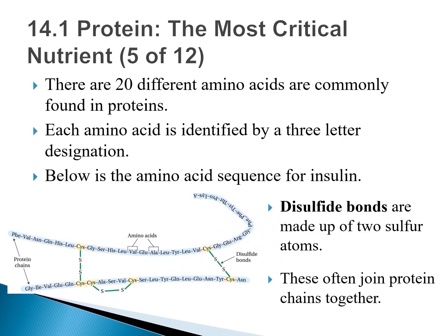There are 20 different amino acids commonly found in proteins. The figure below shows the amino acid sequence of insulin, with each amino acid identified by its three-letter designation. This protein actually contains two individual protein chains held together by disulfide bonds, highlighted in green. Disulfide bonds always connect at the amino acid cysteine, abbreviated as CYS. They are a common feature of proteins and important because they connect protein chains together.